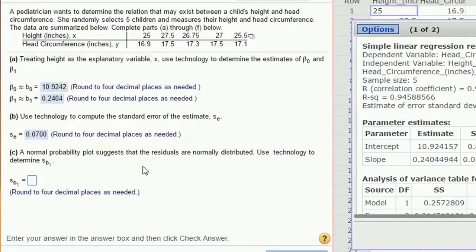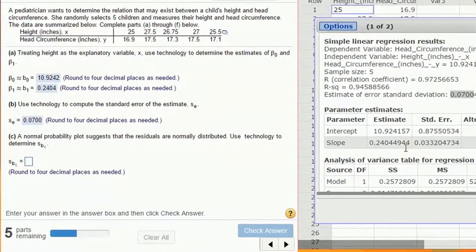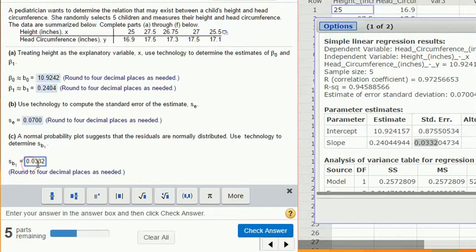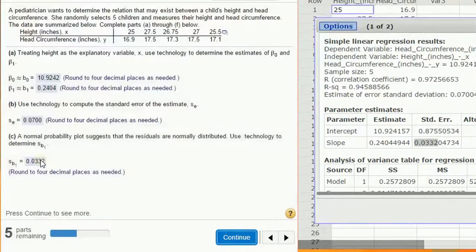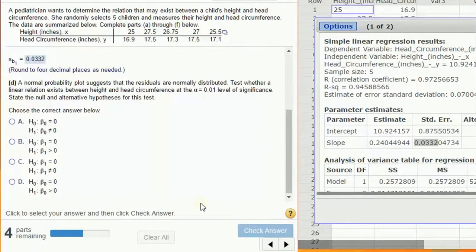Assuming normal probability plot, the standard error of B1. That's given right here, the standard error of B1, which is our slope, 0.0332. Paste it over.